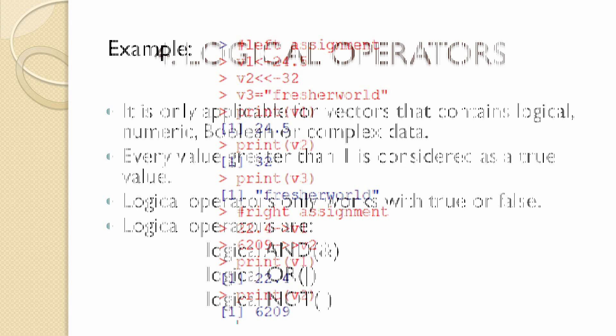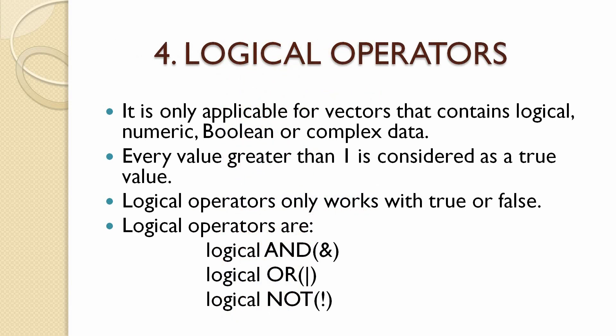The next operator is logical operators. Logical operators are only applied for vectors containing logical, numeric, boolean, or complex type data. Every value greater than 1 is considered true, and values less than 1 are considered false. This is because logical operators only work with true and false values and return true or false. In R, there are three types of logical operators: logical AND, logical OR, and logical NOT.